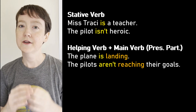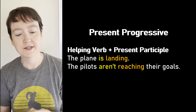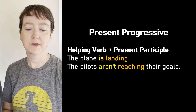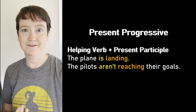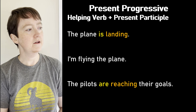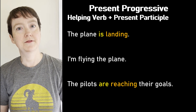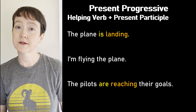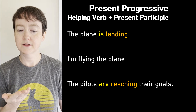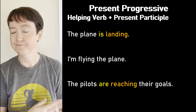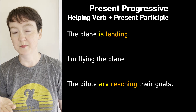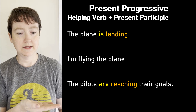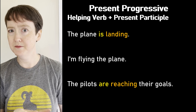Together, this is called the present progressive tense. Be plus present participle equals present progressive. Let's look at these present progressive sentences. What is the order of the words? 'The plane is landing.' The plane — subject. Is — helping verb. Landing — present participle, main verb.